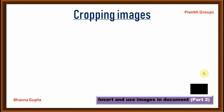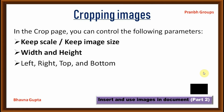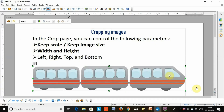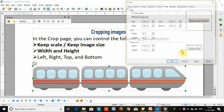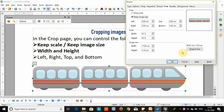Let's move to the next method: cropping images. Follow these parameters for cropping an image. Let's do the practical and learn how to apply it. Right-click on the image, select Picture from the pop-up menu, select Crop, then click the Keep Scale parameter and change the size.